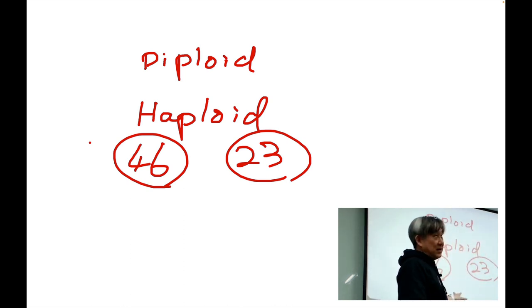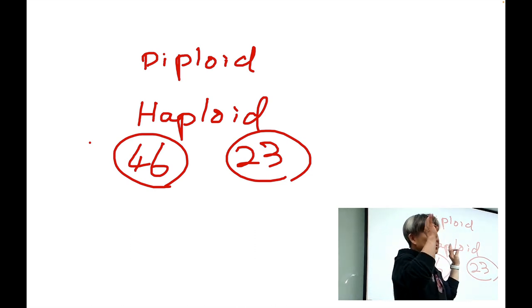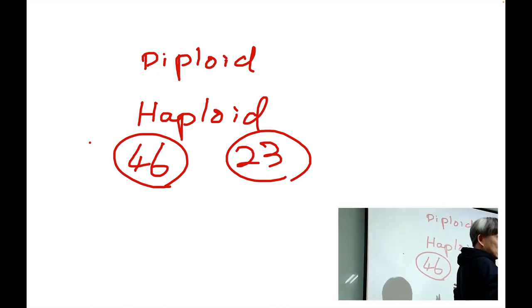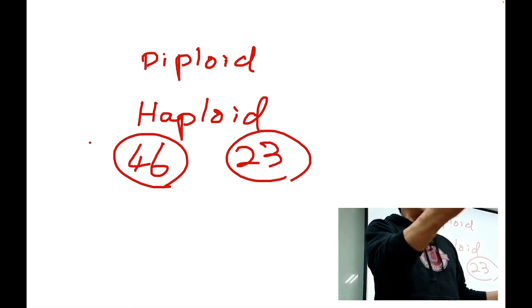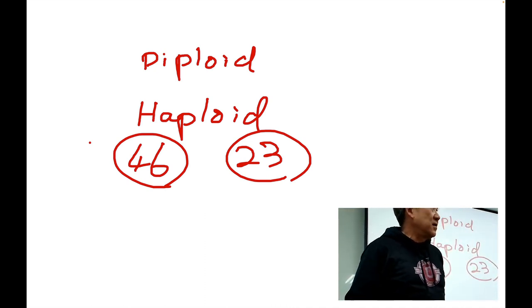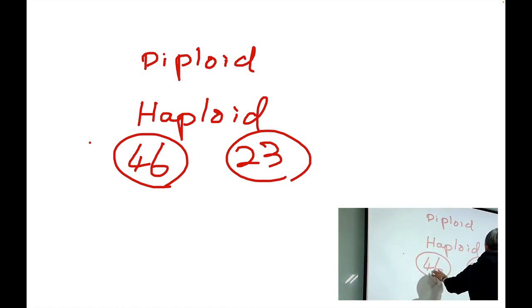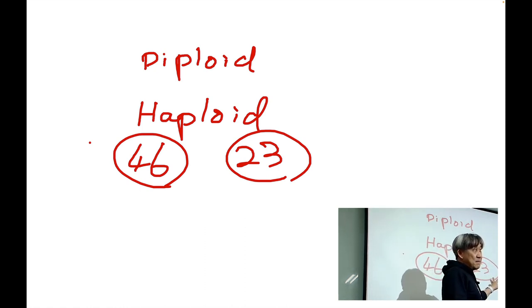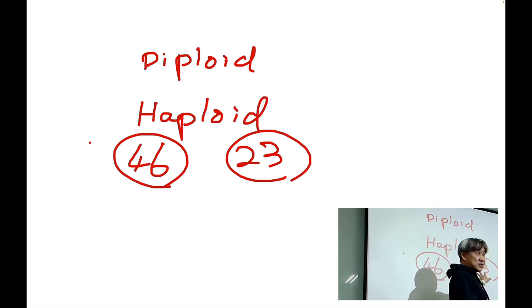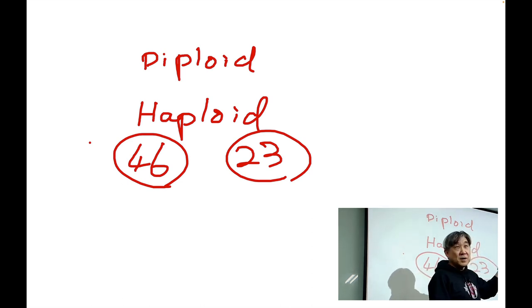Both 23 and 46 can be correct depending on the different circumstances. In terms of sheer number of chromosomes, we have 46 chromosomes in our normal body cells. However, if someone asks how many unique chromosomes do you have in every body cell, the answer should be 23. That means for each unique chromosome, we have another double copy replica — 23 unique types, but 46 total.